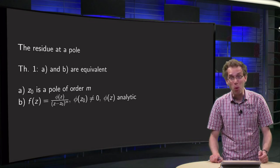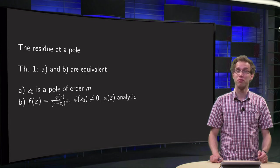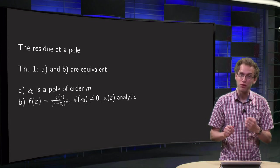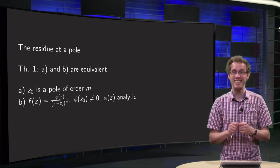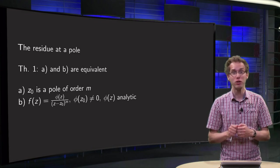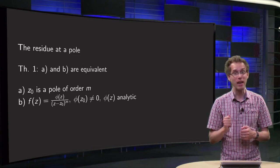If your singularity is a pole, you do not need to compute the full Laurent series to find its residue. Instead, we have a nice formula which picks out exactly the b1 term we need. In this video, we will learn this formula to compute residues at a pole.